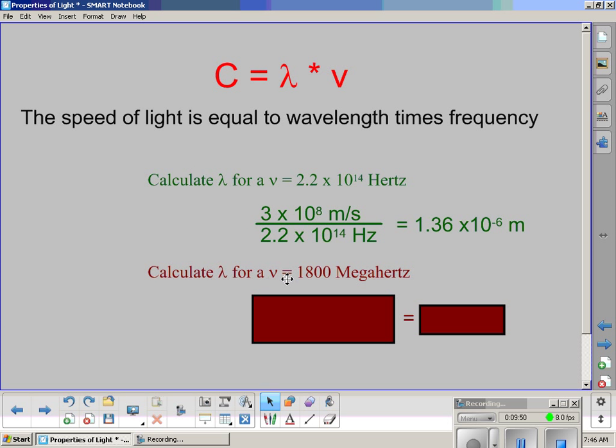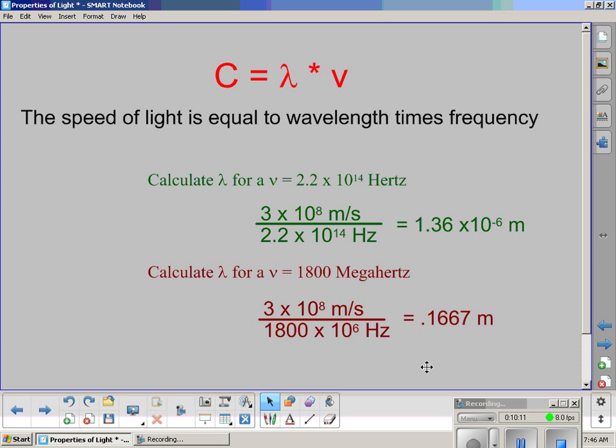Now here, this one's a little different. We have 1,800 megahertz. Now watch out for these prefixes. Mega stands for 10 to the 6th. So when we enter this, we're going to have to have 1,800 times 10 to the 6th hertz. Speed of light divided by that will give us 0.1667 meters.